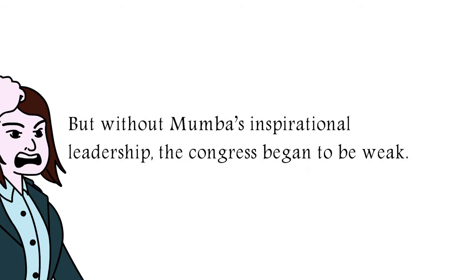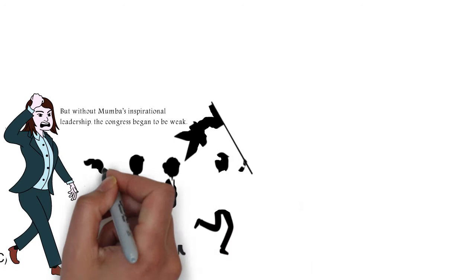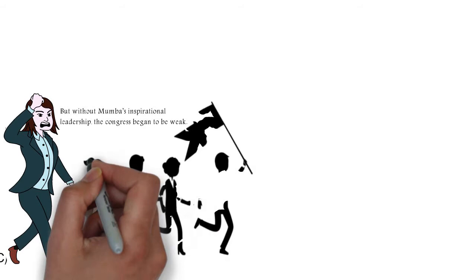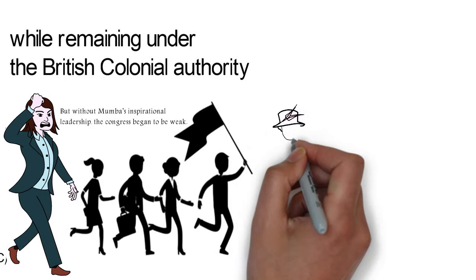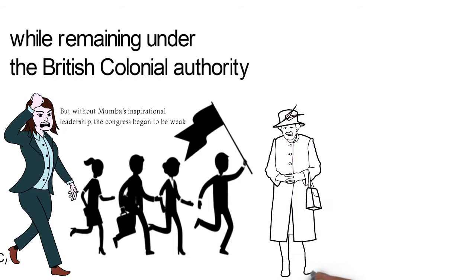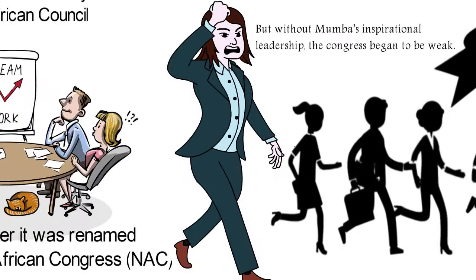By the 1950s, however, the NAC began to experience a revival. Before then, key leaders of the NAC like Sangala and Dr. Hastings Banda thought that Nyasaland should evolve toward self-government while remaining under British colonial authority. However, in 1953, the colonial office created the Federation of Rhodesia and Nyasaland, in which Europeans would still hold a position of leadership. The NAC leaders saw this as a huge betrayal.